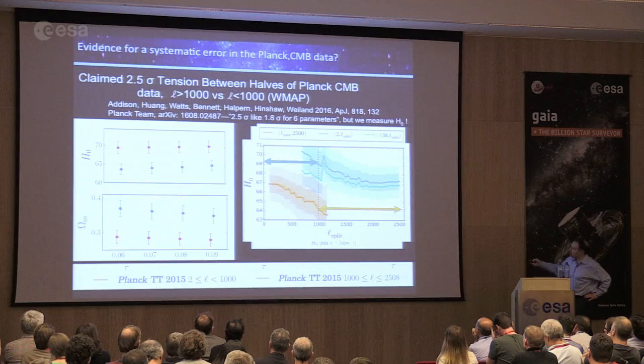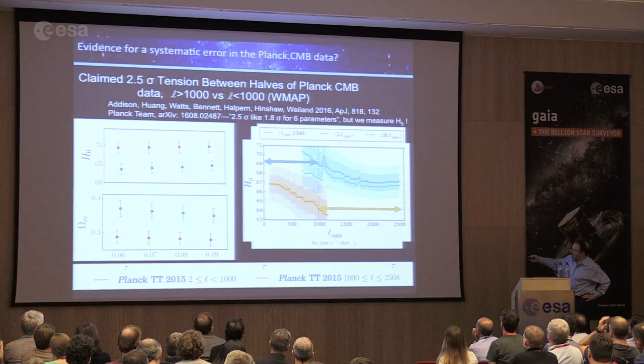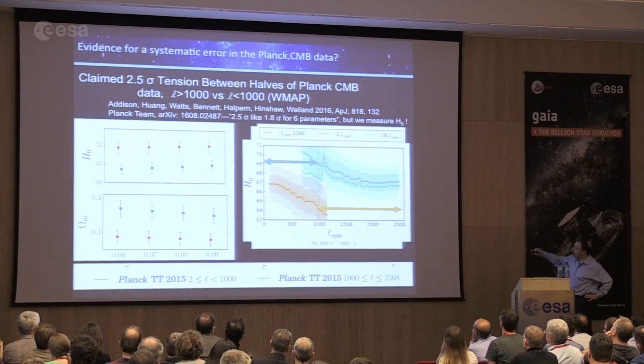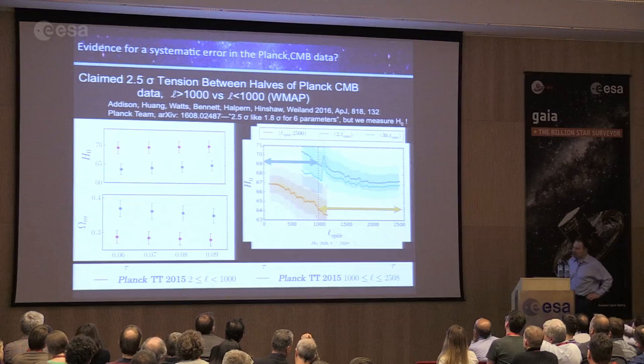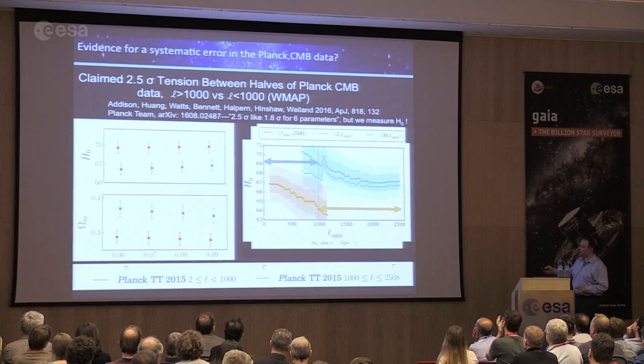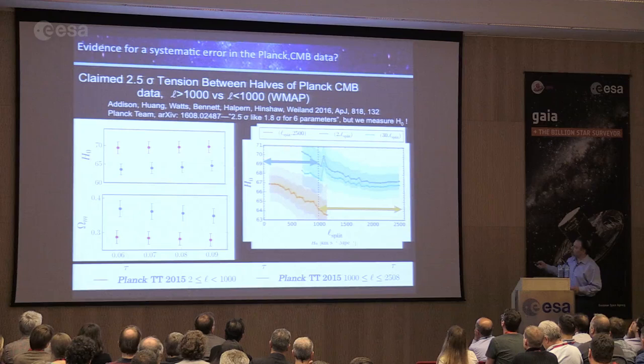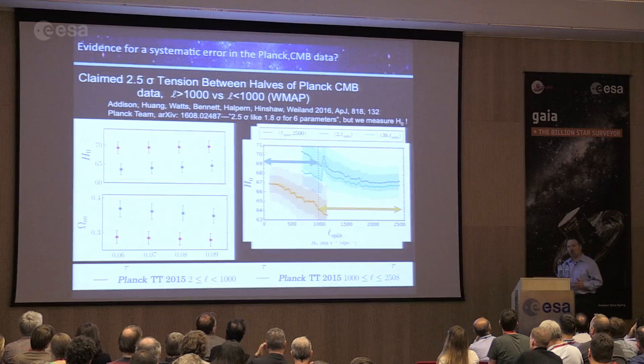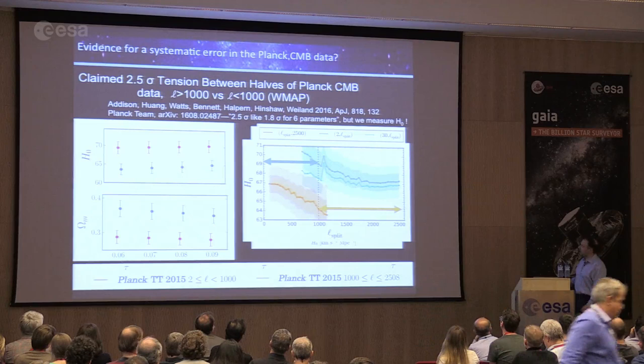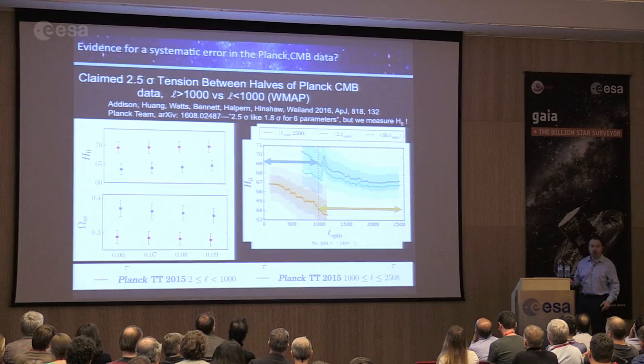The Planck team's response to the 2.5 sigma tension between the two CMB halves is that when you account for all six parameters describing the CMB, finding one out of six at 2.5 sigma is really more like a 1.8 sigma result. My response is: I can only measure the Hubble constant — that's the one parameter we can actually check — so I think we should focus on just that. This story will continue to evolve, and we think the best thing we can do is improve the local measurement. Gaia is definitely the ticket.